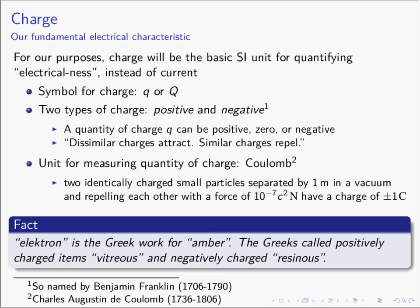Charge is the fundamental characteristic — or adjective — that describes the electrical nature of some object. It is simply an adjective. Just like you can talk about how much mass something has or what its length is, we can talk about what its charge is: how electrical something is. The variable or symbol we use for charge is Q.